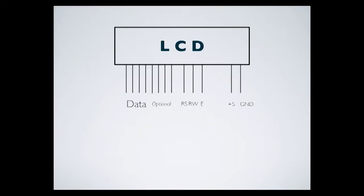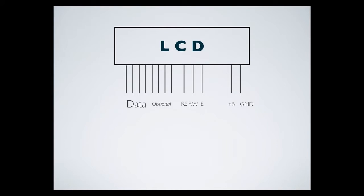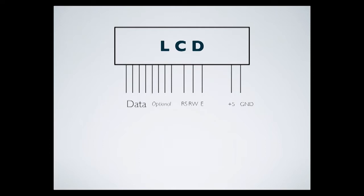Looking at this drawing from last week, we had four data pins, an RS pin, an RW pin, an E pin, plus 5V and ground. The actual Arduino pins used was seven — four data, RS, RW, and E. Optionally you can use eight data pins for extended character sets, which would be 11 pins total. The Arduino Uno only has 13 digital pins, and two are reserved, so you really only have 11 — meaning this one LCD uses up all your digital pins.